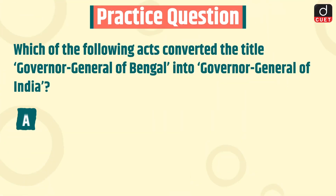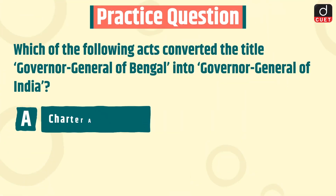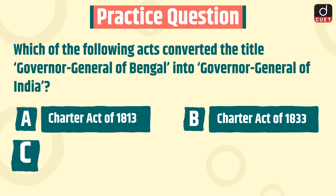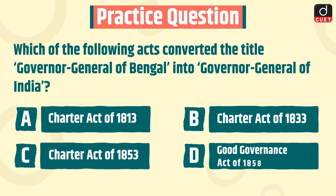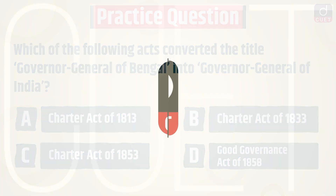Now it's time for the practice question: which of the following acts converted the title Governor-General of Bengal into Governor-General of India? Charter Act of 1813, Charter Act of 1833, Charter Act of 1853, or Good Governance Act of 1858? Send your answer in the comment section. Stay tuned for the next episode. Thanks for watching. Bye.